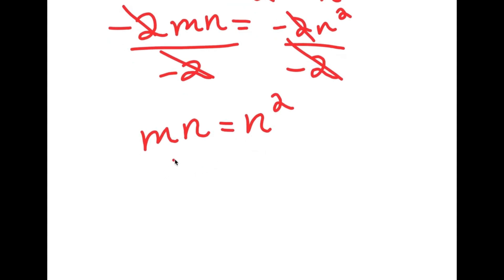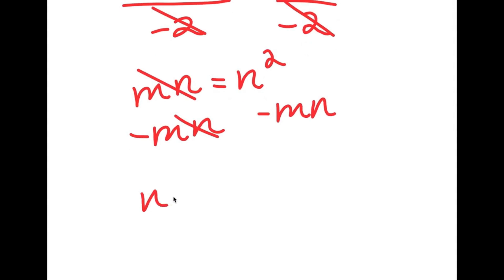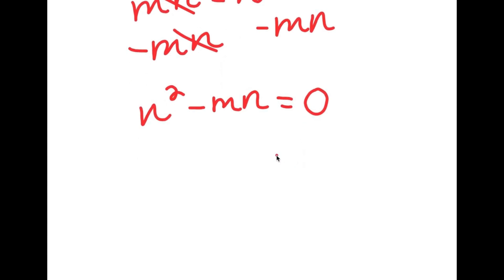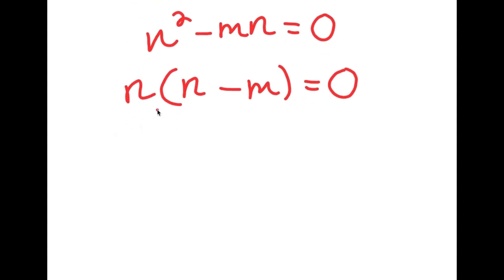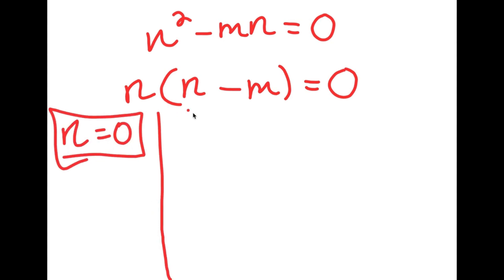From here, I'm going to subtract mn on both sides. So then these two cancel out, and I get n squared minus mn is equal to 0. The greatest common factor in n squared minus mn is n. So if I factor out n, I get n times n minus m is equal to 0. So now this gives me two equations: n is equal to 0, which is already a solution, and n minus m is equal to 0.